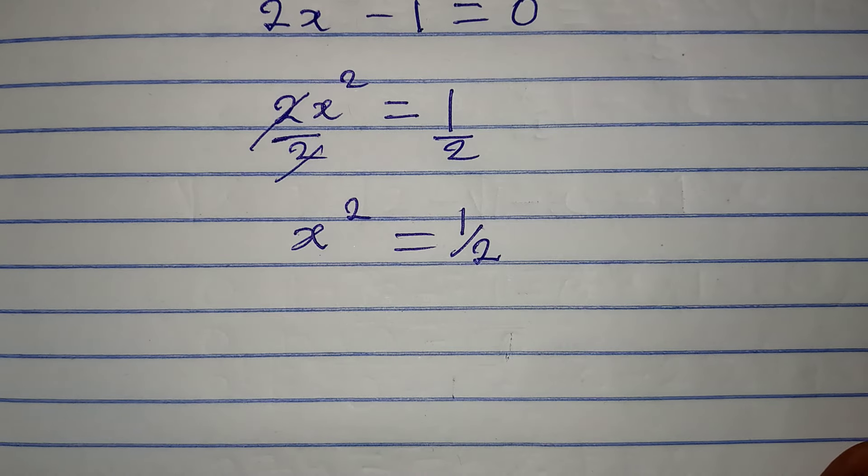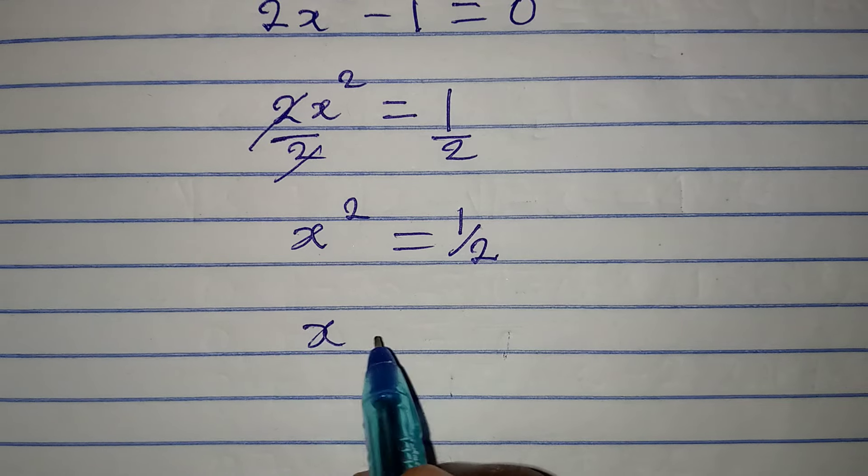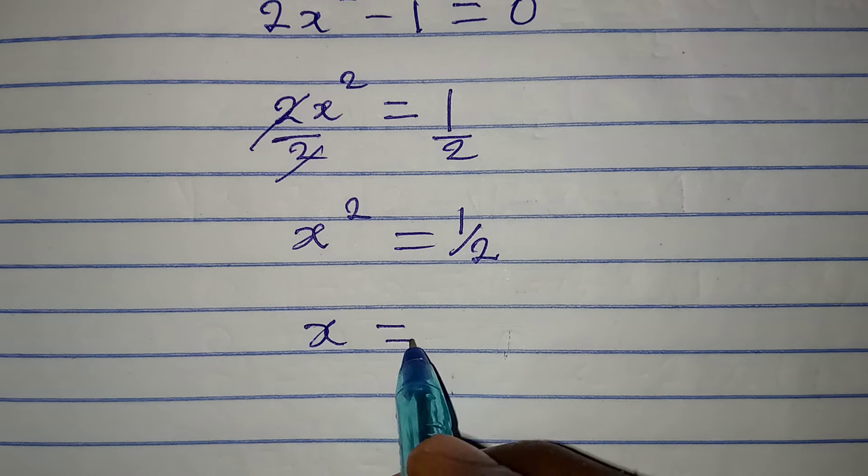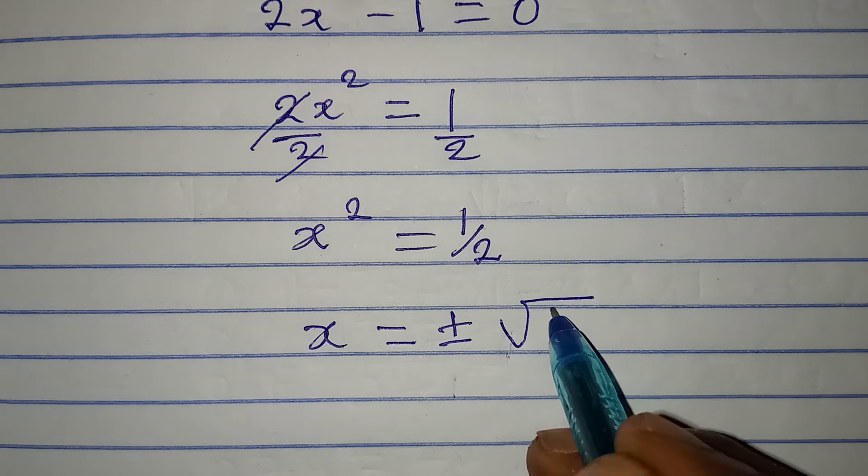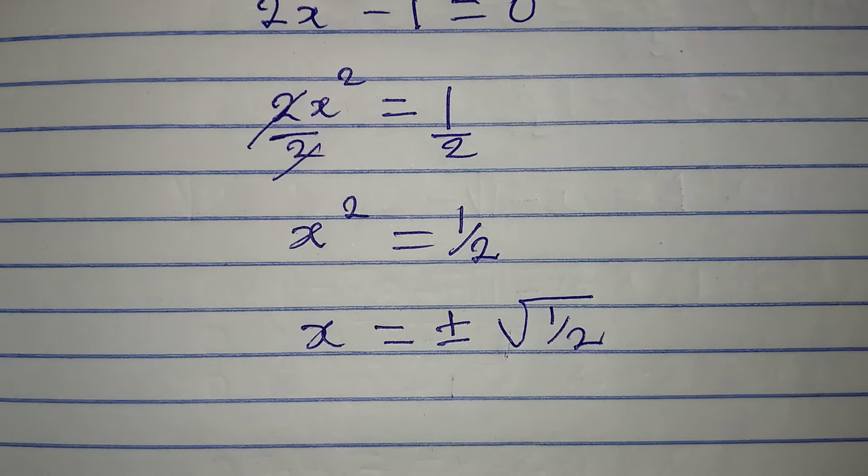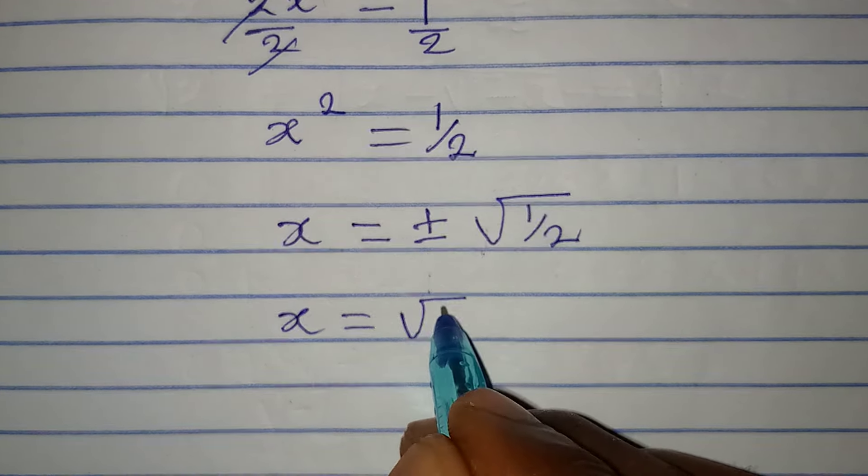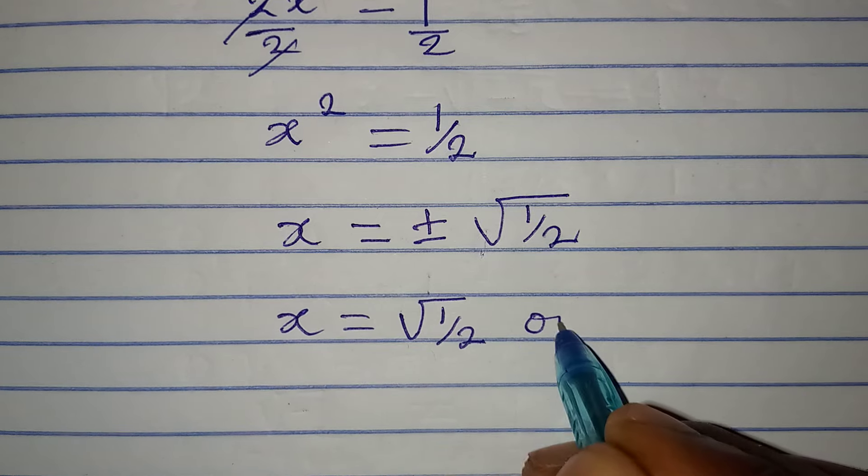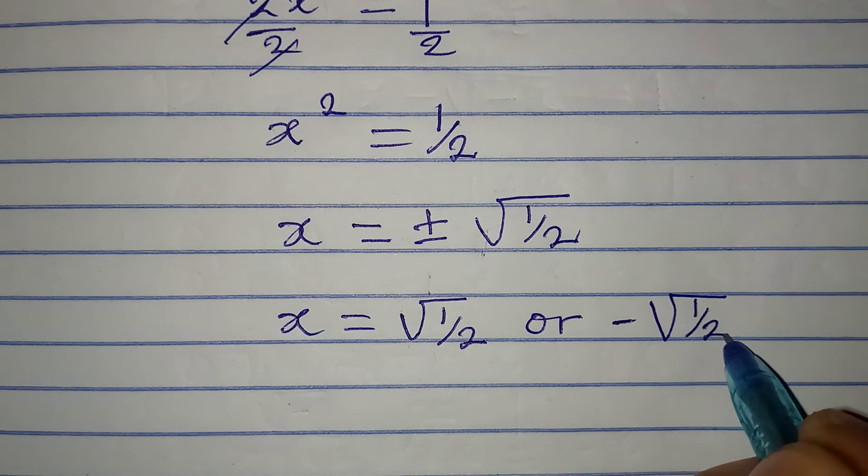But then we are looking for the value of x. I have to take the square root of both sides so that I will have positive or negative square root of 1 over 2. What does this mean? It means that x is equal to square root of 1 over 2 or negative square root of 1 over 2.